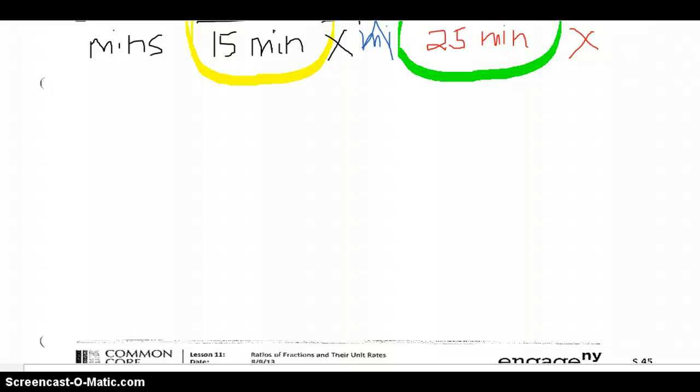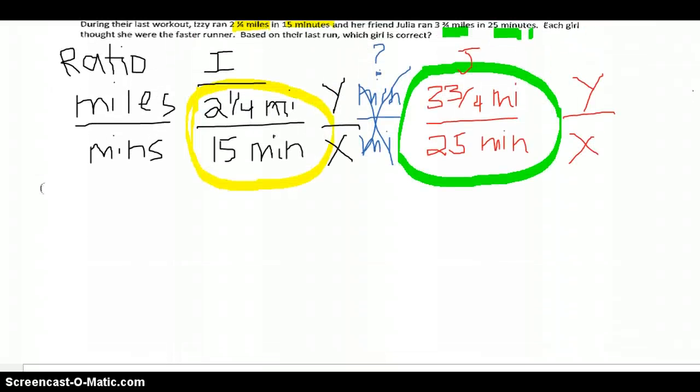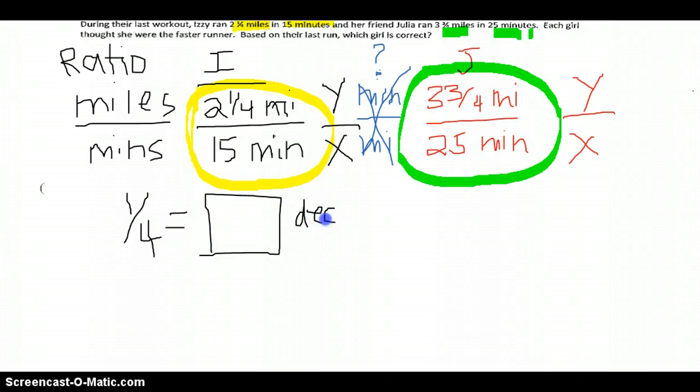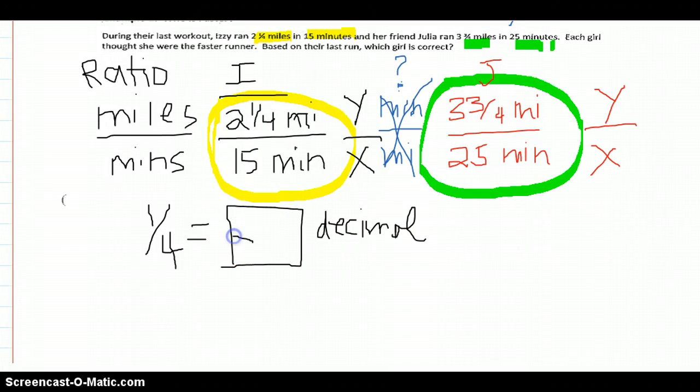Let's continue. We can use our calculator to find that. In our calculator, we aren't going to be able to use a fraction. So we need to know what a quarter is as a decimal. Does anybody know what that is as a decimal? A great way to remember is it's a quarter, and the worth of a quarter is 0.25. So here we have 2.25 miles over 15.